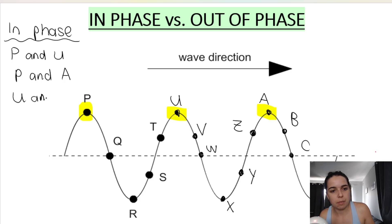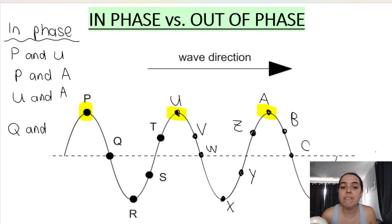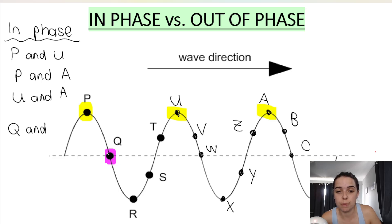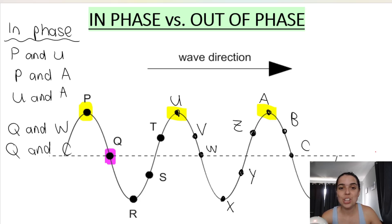We could also do U and A. Can you find a point in phase that's not a crest or trough? Try and find the points in phase with Q. Q comes just after you pass a crest — it's at the equilibrium position just after a crest. So it could be W, because W is also at the equilibrium position just after a crest. It could be Q and W, or Q and C, because C is also at the equilibrium position just after a crest.